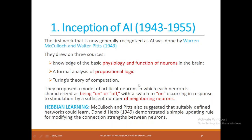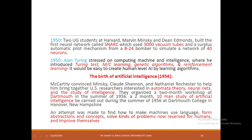They conducted an experiment on a collection of neurons where each neuron could be turned on and off based on the stimulation of neighboring neurons. This experiment was called Hebbian Learning, and that same Hebbian Learning is nowadays called a convolutional neural network.